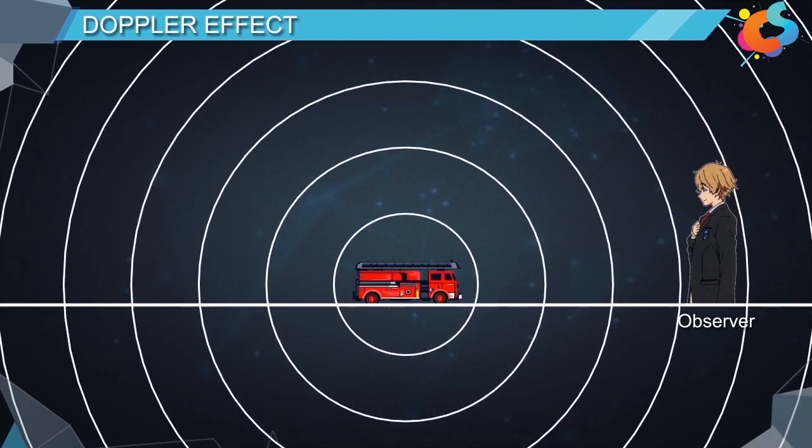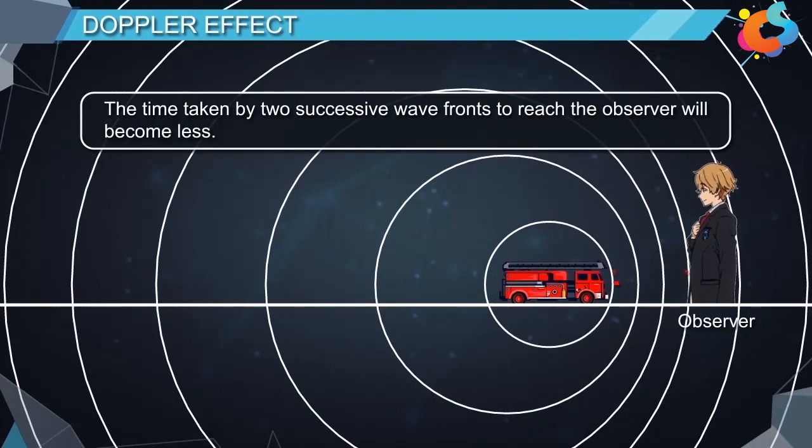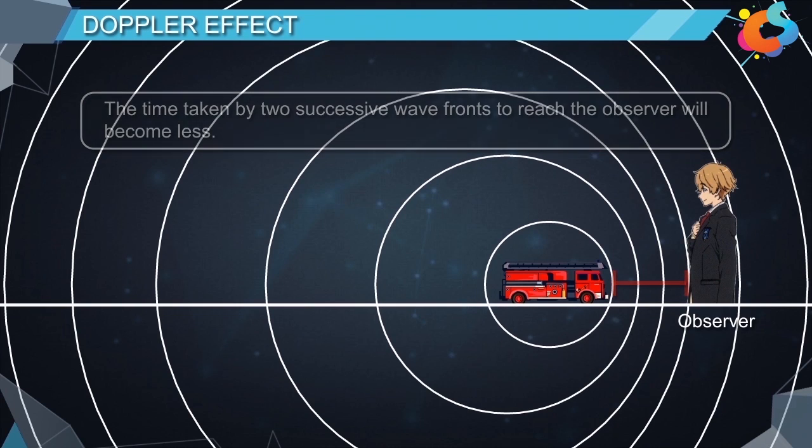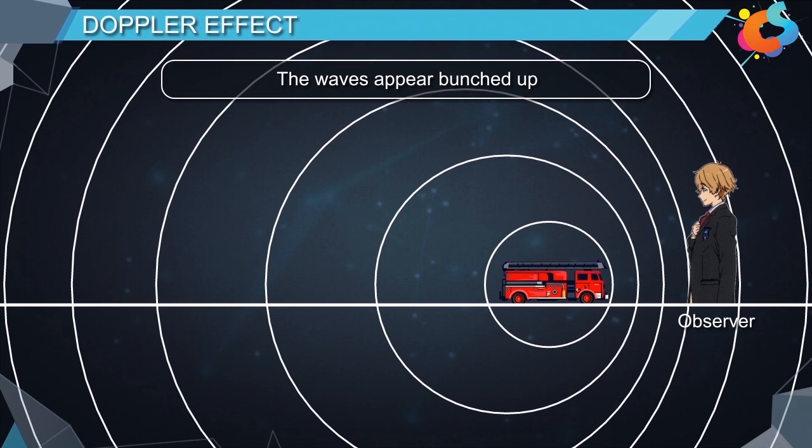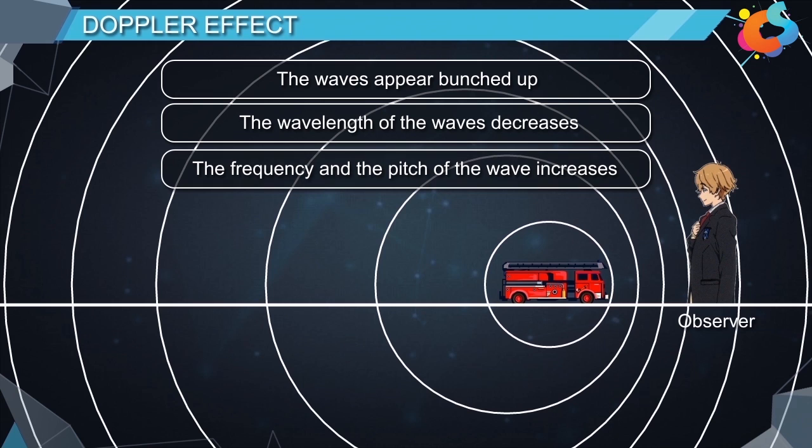Similarly, if the source emitting waves moves towards the observer, the time taken by the two successive wave fronts to reach the observer will become less, the waves appear bunched up. Due to this the wavelength of the waves decreases, the frequency and the pitch of the waves increases.